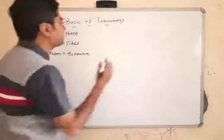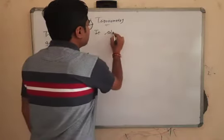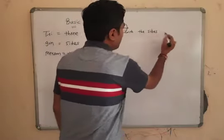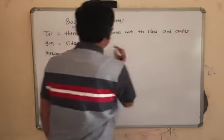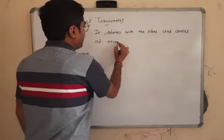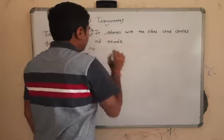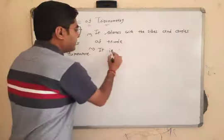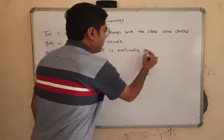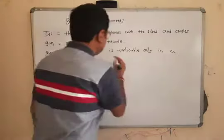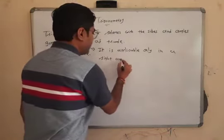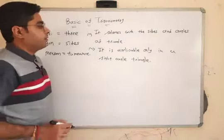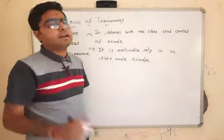In other words, trigonometry relates with the sides and angles of a triangle. It is applicable only in a right angle triangle. Make sure we make trigonometric ratios in a right angle triangle only.